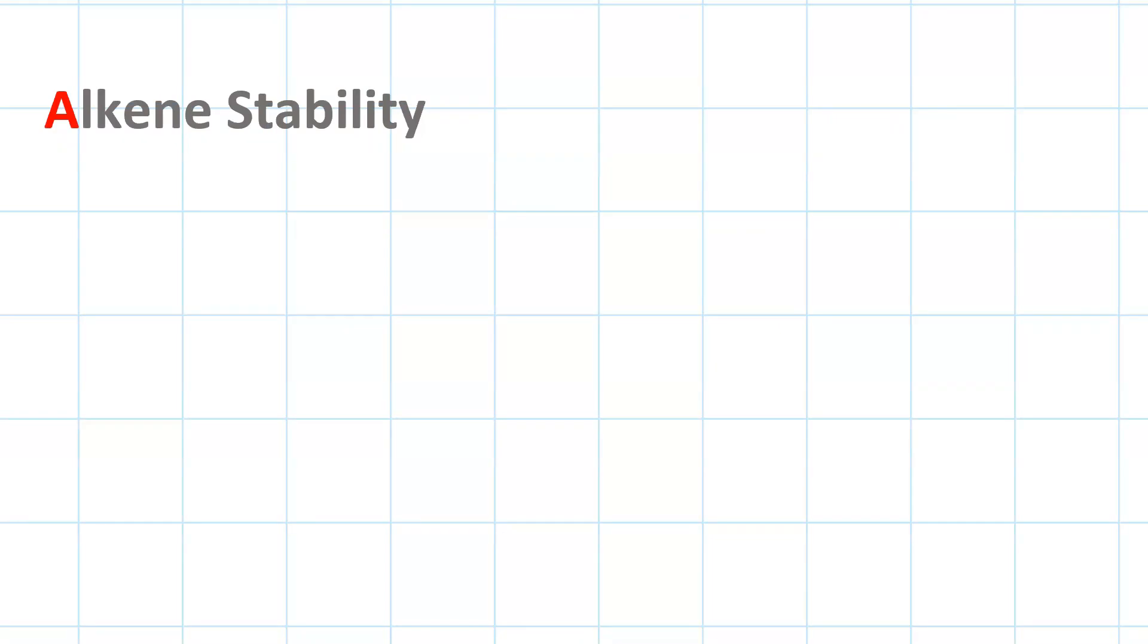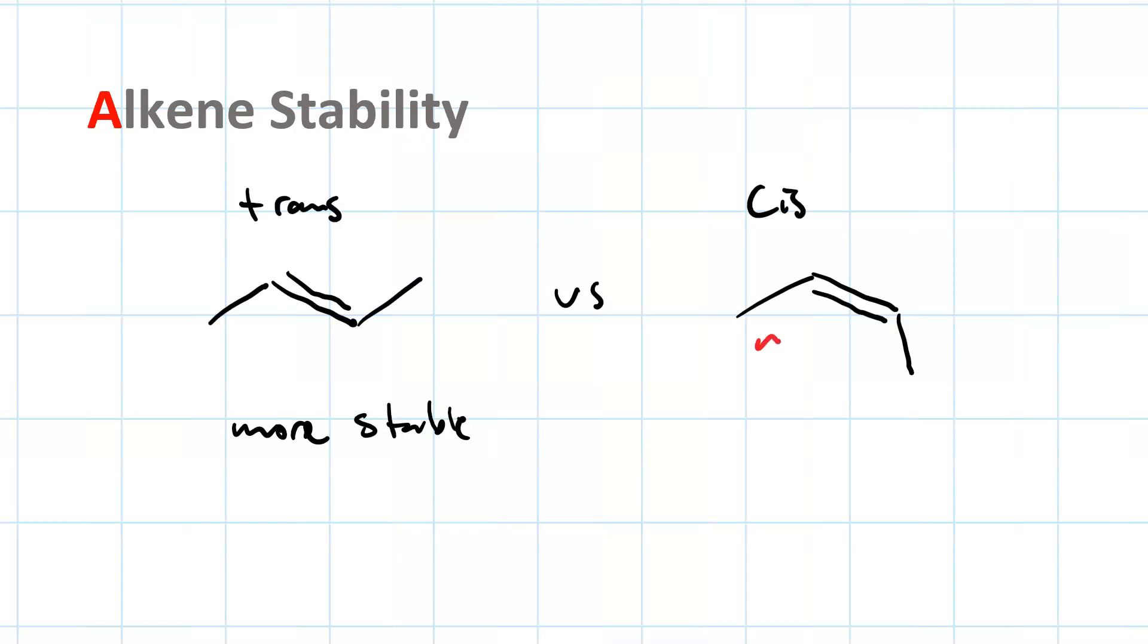Alkene stability. Trans is always more stable than cis. And that difference in stability is due to a steric interaction between the two alkyl groups in the cis.